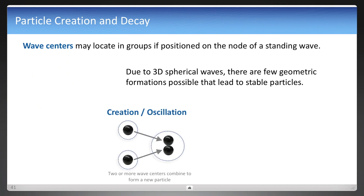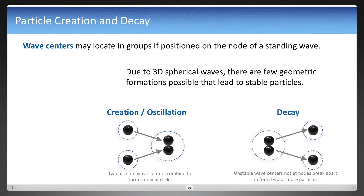Now, creation. Particles might combine just like what we see in atoms, and particles can do the same thing. But if they are not on nodes, they decay — they are unstable because they are not at the standing wave nodes. This is creation, otherwise known as oscillation and decay.